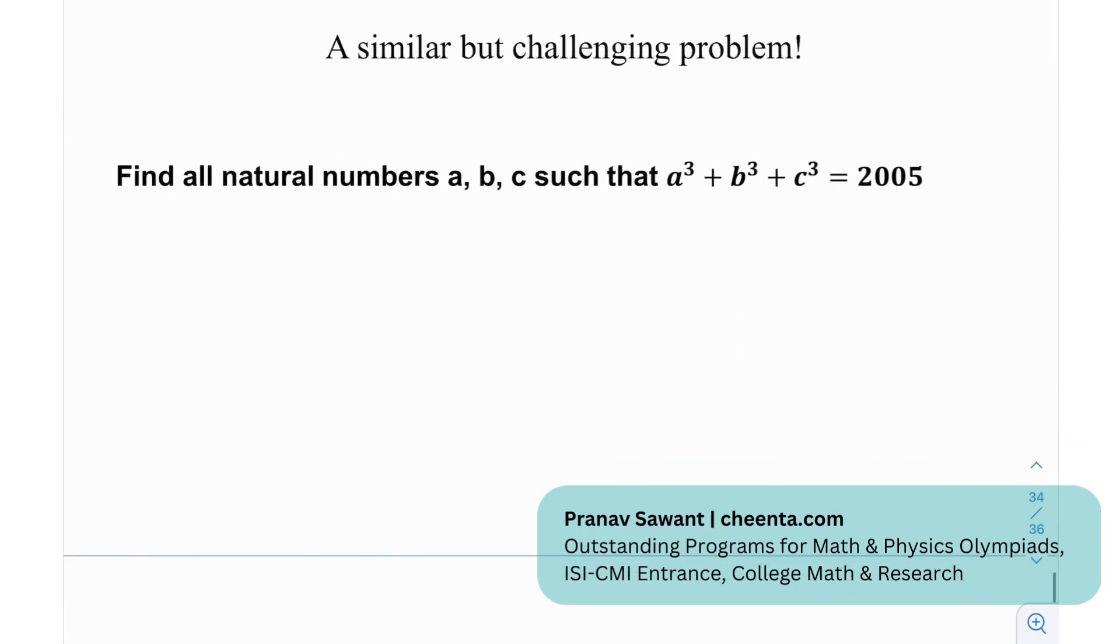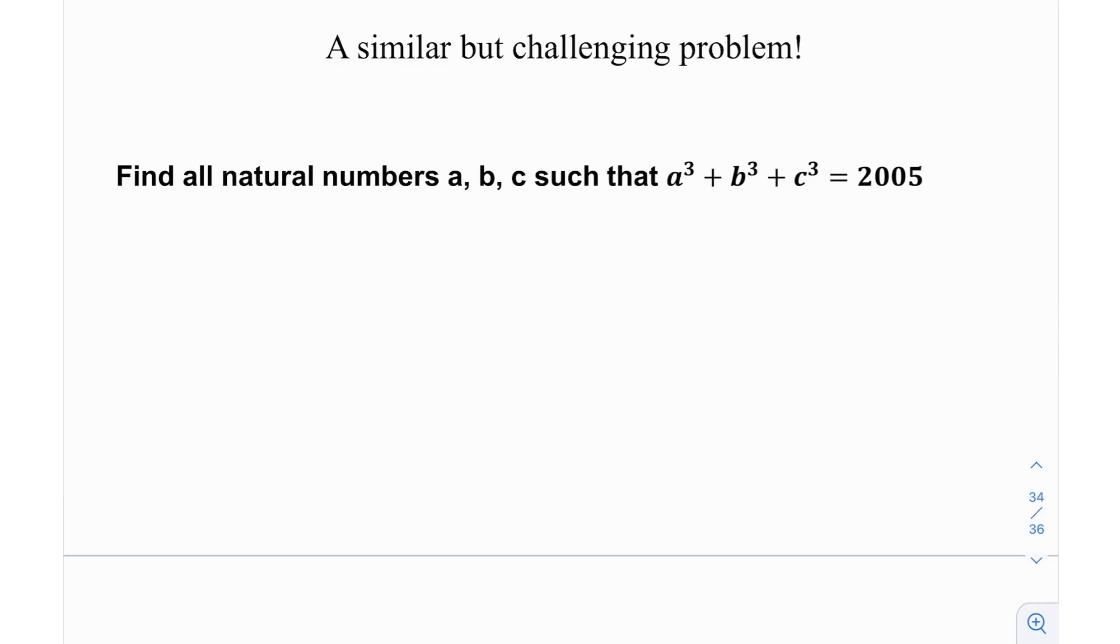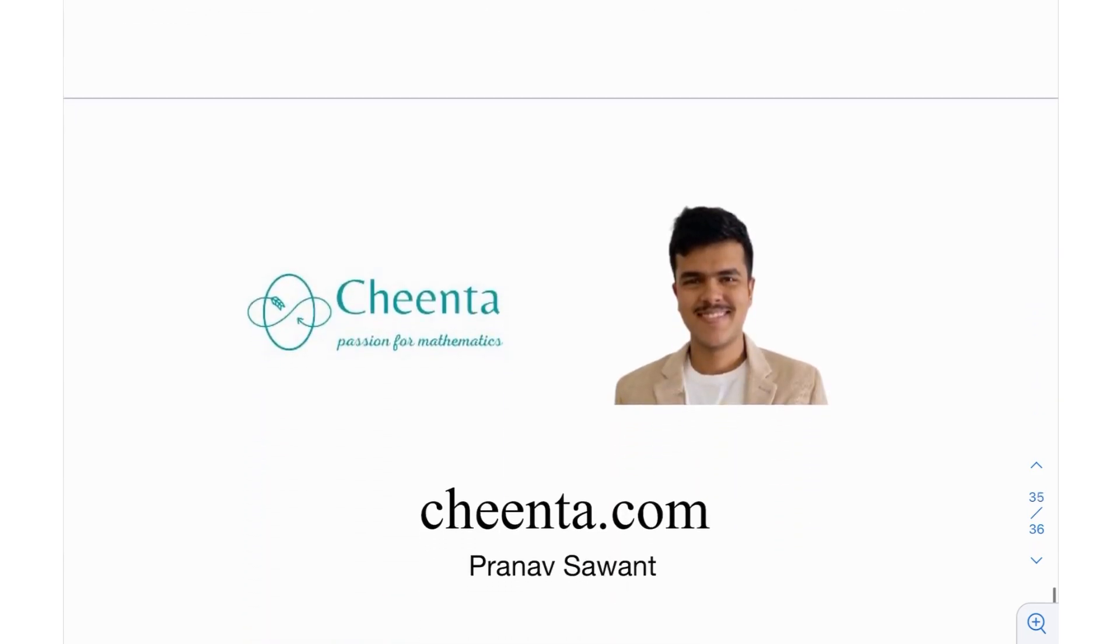You have a similar challenging problem. I may have given this before though. You need to find all natural numbers A, B, C such that A³ + B³ + C³ = 2005. Try this out. Try different iterations, varying 2023, it's a good number. Try maybe A³ + B³ + C³ = 2023. Maybe try varying the coefficients as well, for example, A³ + 3B³ + C³ = 2023. Things like that. Try diving a little bit deeper into how this progresses for different constants that we choose. Try it out and let me know. Until then, I'll see you in the next video. Thank you very much and bye bye.